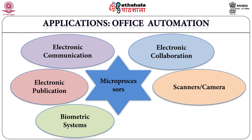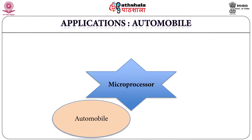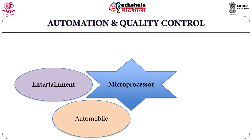Multimedia systems and electronic document management systems are also part of office automation. In automobiles, many functions such as guided vehicle systems, airbag control, speed control and electronic dashboards use microprocessors. High-end vehicles can have as many as 100 microprocessors or microcontrollers performing different tasks. In entertainment equipment like television, cable TV, set-top box, remote control, music players, video games and musical instruments, microcontrollers or microprocessors are used to maintain the quality of audio and video signals.